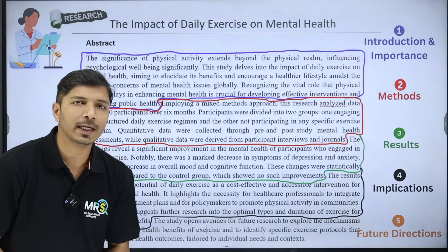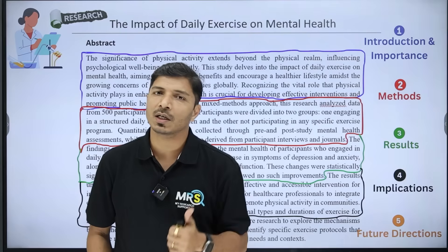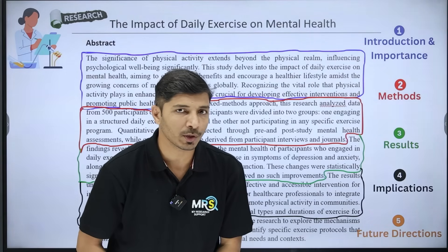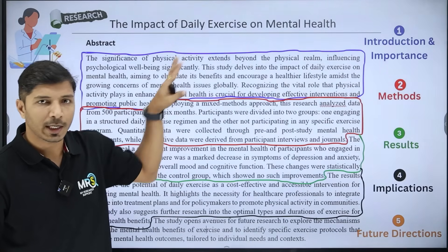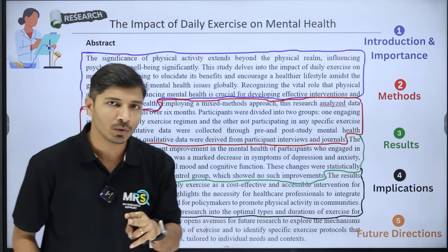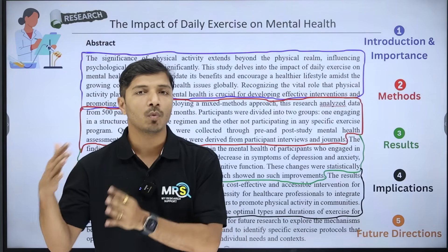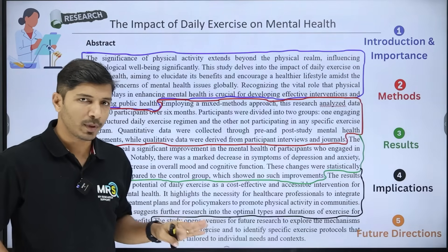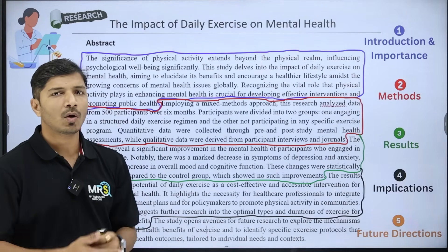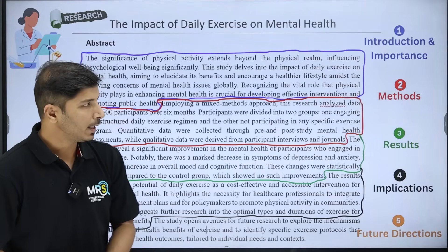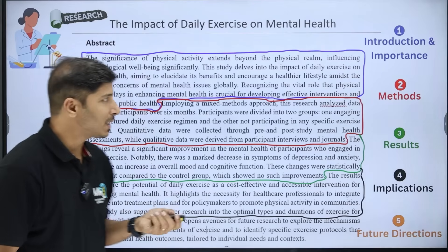Before selecting any type of abstract, you have to think about two points. First, whether the journal where you are about to submit your research or review paper has specifically mentioned to include any of these elements while writing your abstract. Second, whether that journal has mentioned a word limit. If the journal has not mentioned anything about these elements and the word limit is around 250 to 300, then it is possible to accommodate all five points.